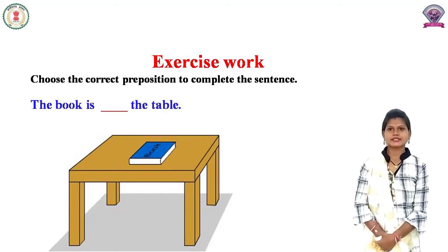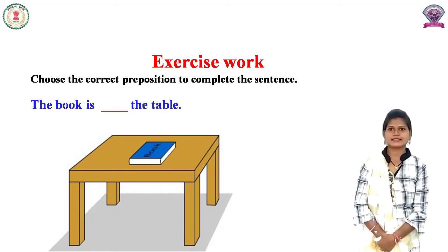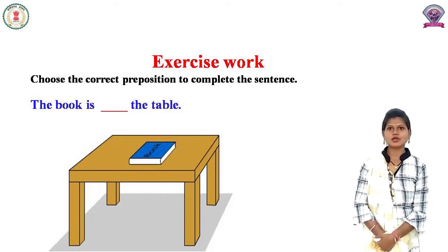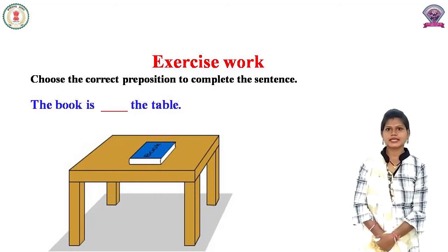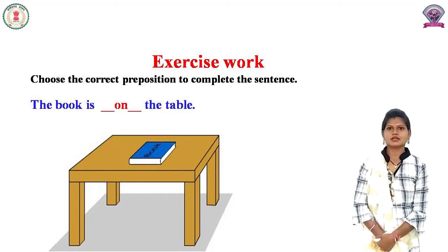Look at this picture. इस picture में आपको क्या दिखाई दे रहा है? Where is the book? Book कहाँ है? Book table पर है। तो पर के लिए हम कौन सा preposition लगाएंगे? On. The book is on the table.